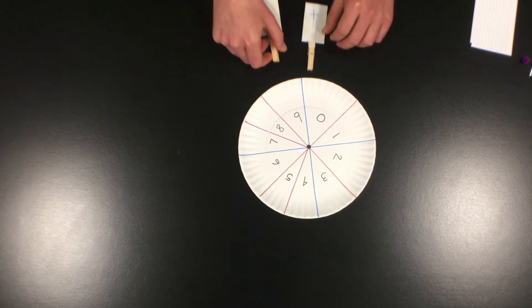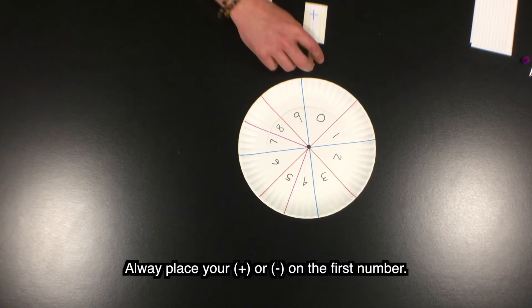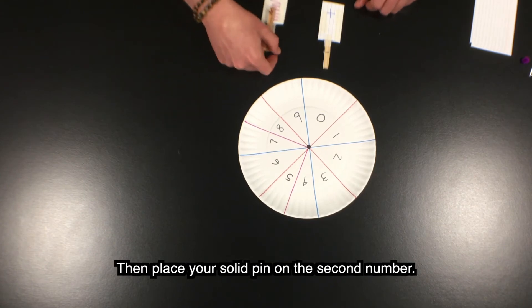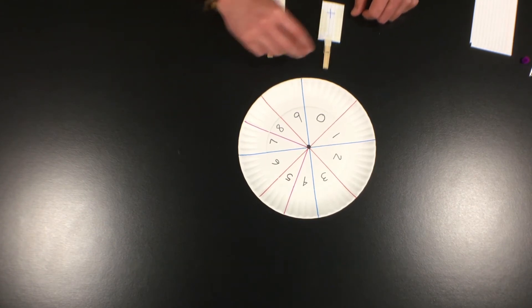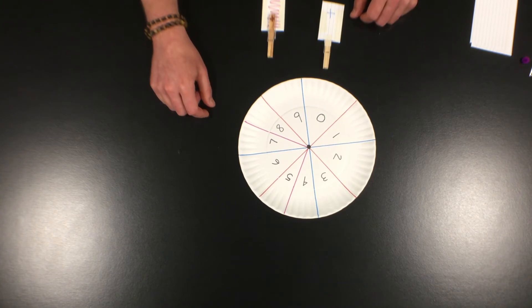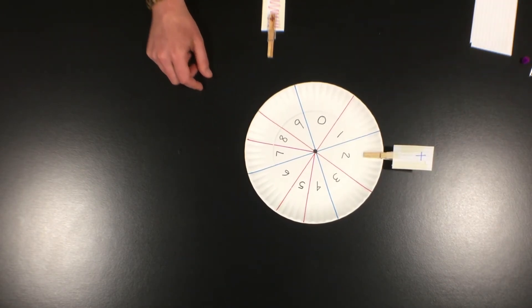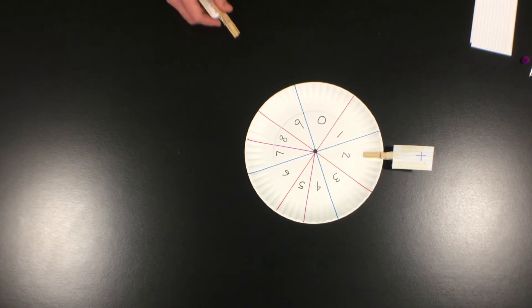When you pick your first number, you're always going to put either the plus or minus sign with the first number. When you pick your second number, you're always going to pick a solid. We're going to start out with addition and use the plus sign. We're going to pick a number on the wheel of math. We've picked number two and you can see that the plus sign is showing. That means we're going to say two plus.